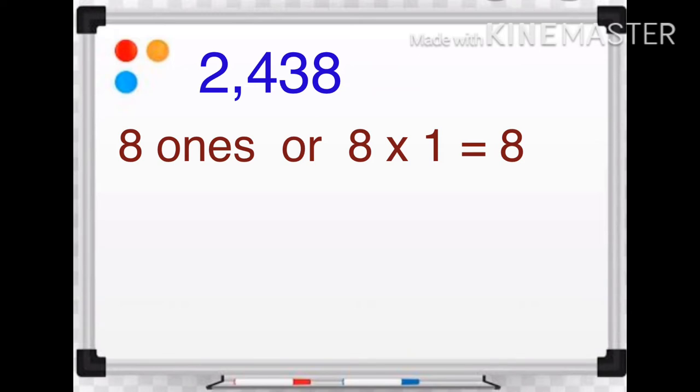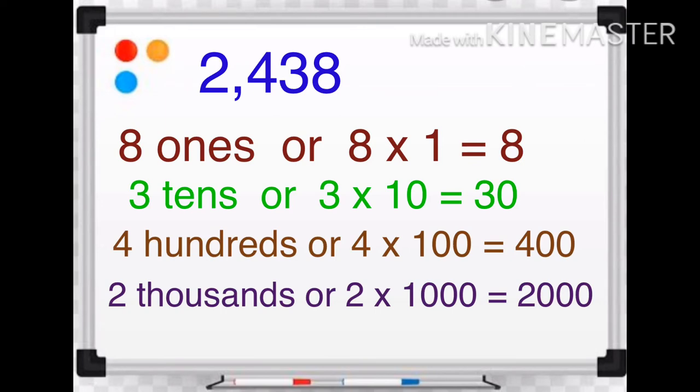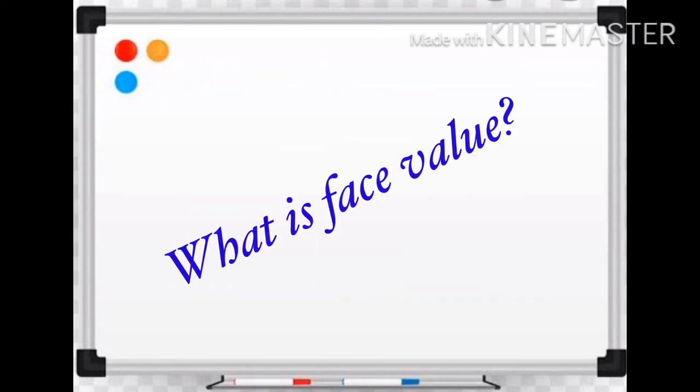The digit 3 is in the tens place, therefore its place value is 3 tens, or 3 by 10 equals 30. The place value of 4 is 4 hundreds, or 4 multiplied by 100 equals 400. Similarly, the place value of 2 is 2 thousands, or 2 multiplied by 1000 equals 2000.